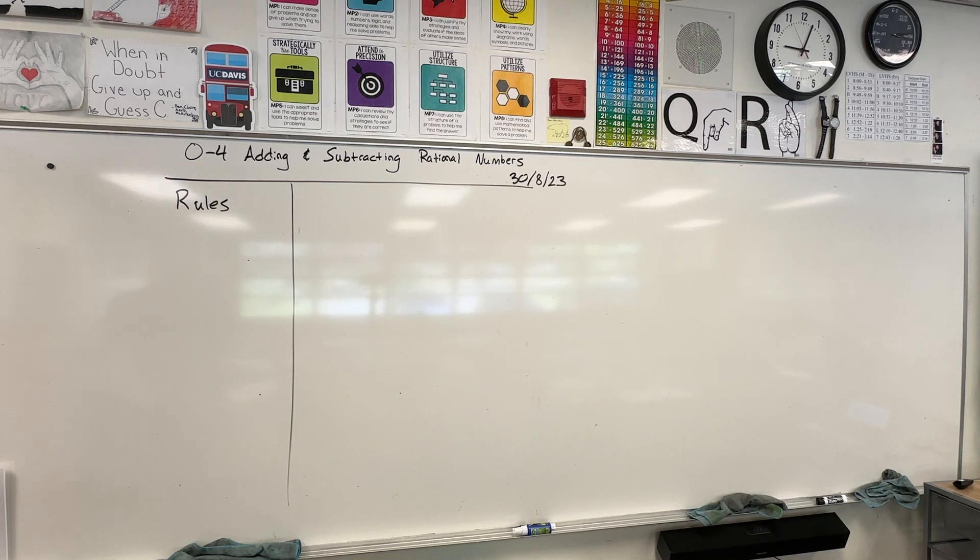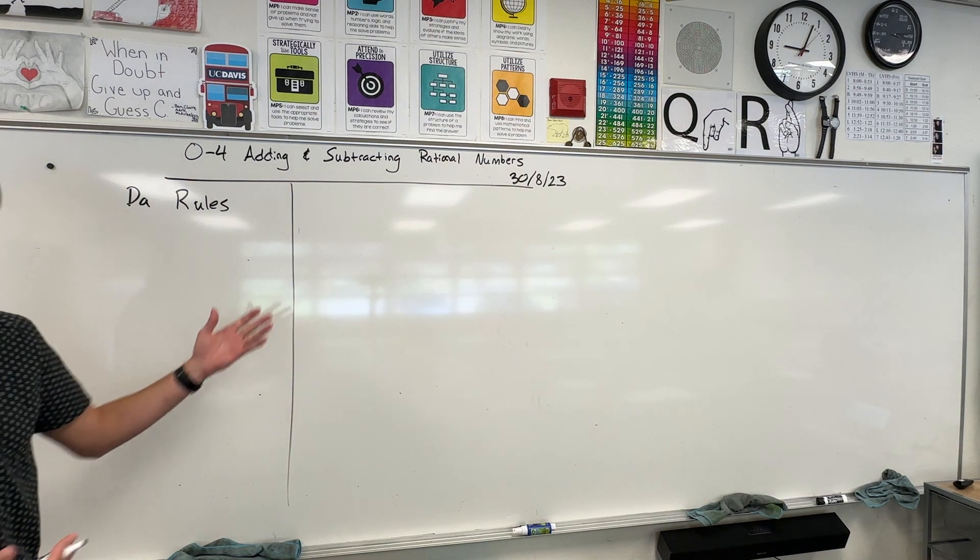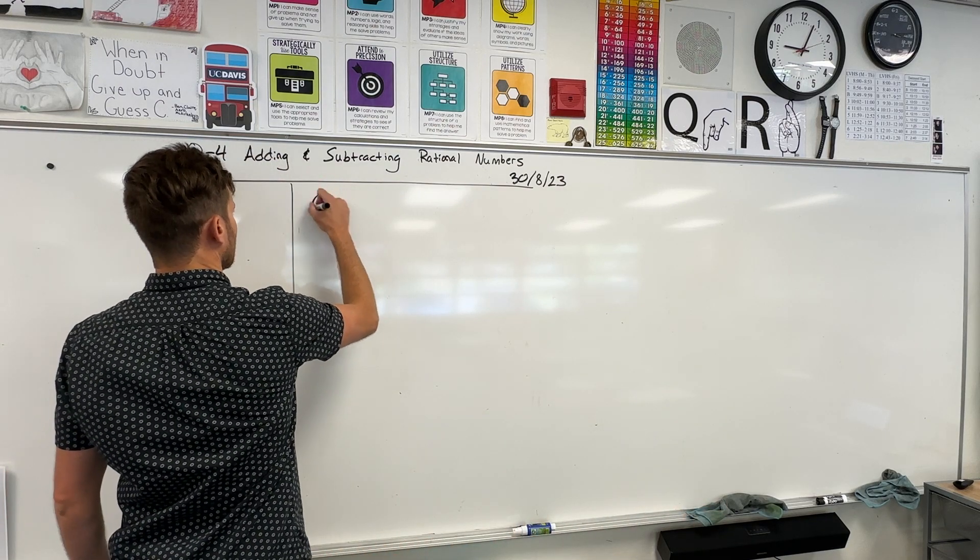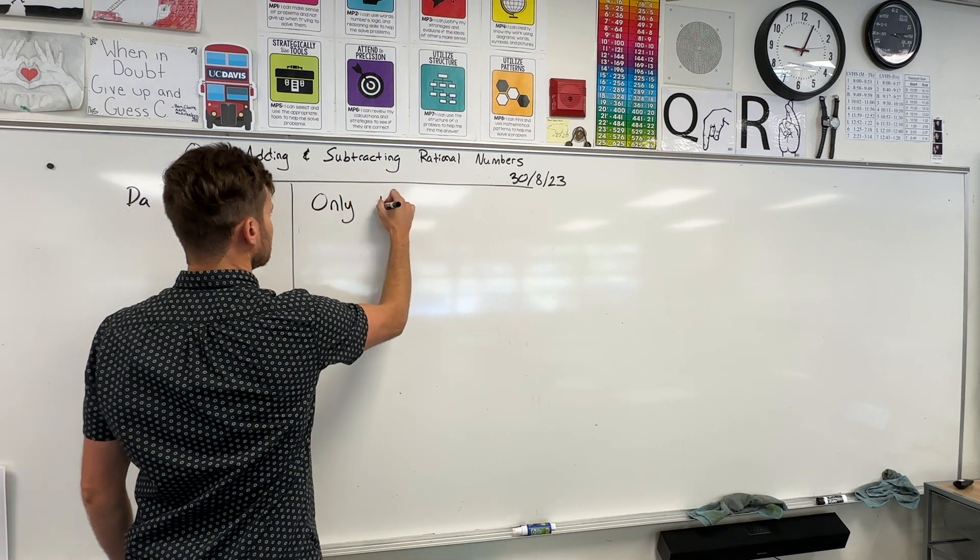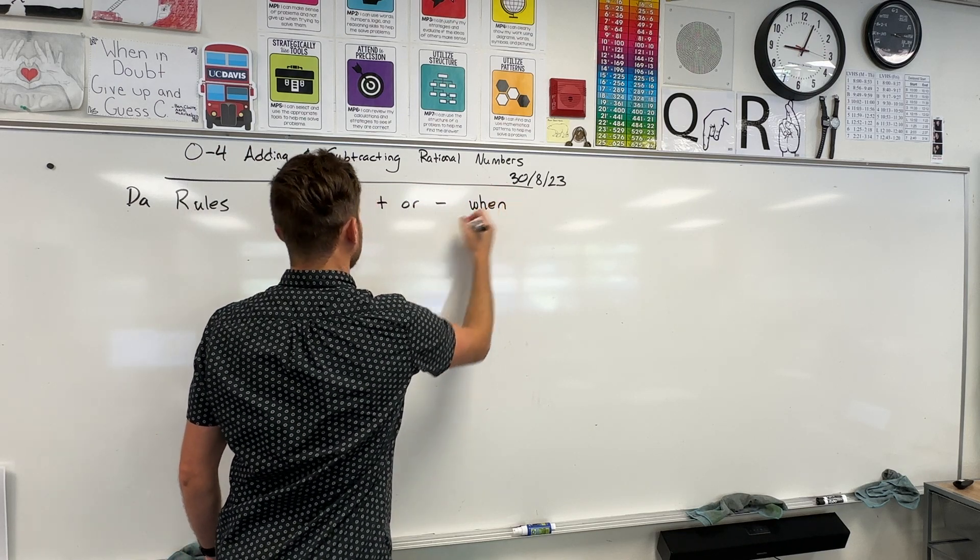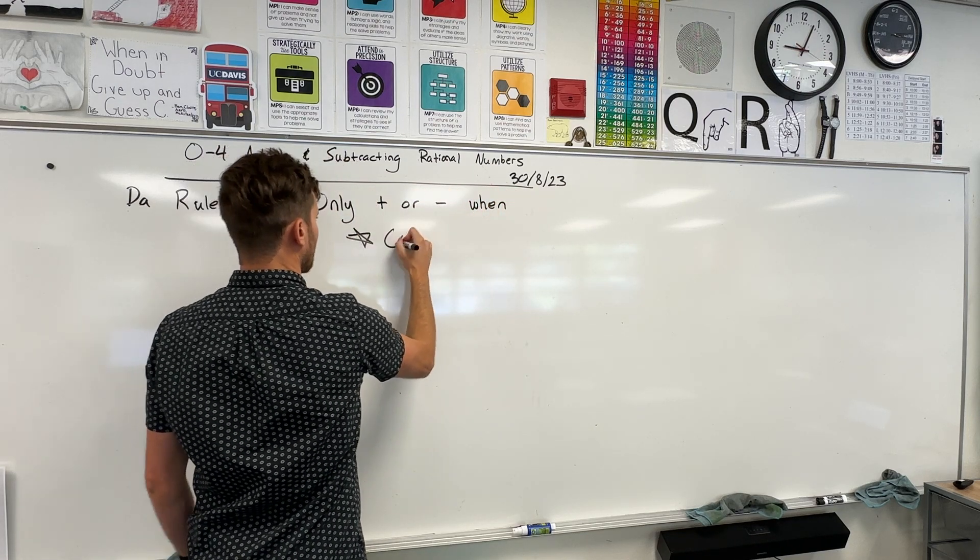I'm going to change this to 'Da Rules' because that sounds cooler. All right, you can only add and subtract fractions when - you guys know this, tell me, teach a lesson for me - only plus or minus when, and then this is the star part: common denominator. And that's the star.